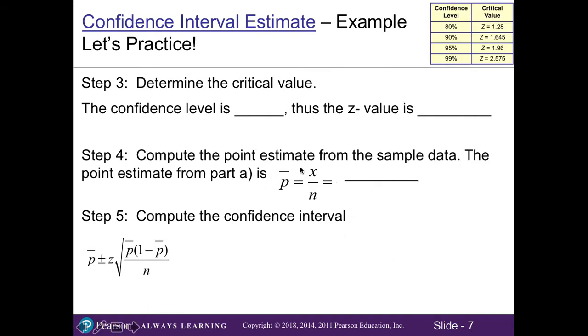Then in part three, we need to find our critical value. So the confidence level that you were asked for was 95%. So I go to my table and at 95%, our z value is 1.96. Now again, here in step four, which you already did in part a, we found our sample proportion, which was 0.72.